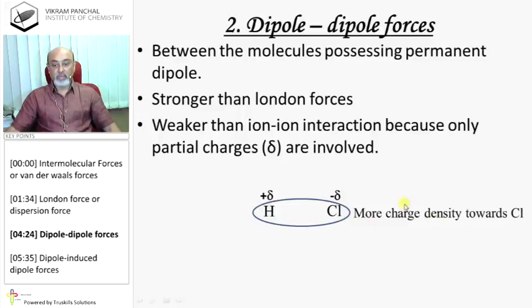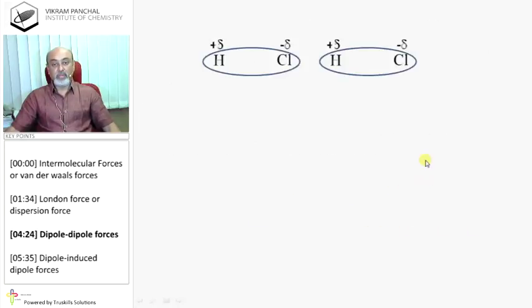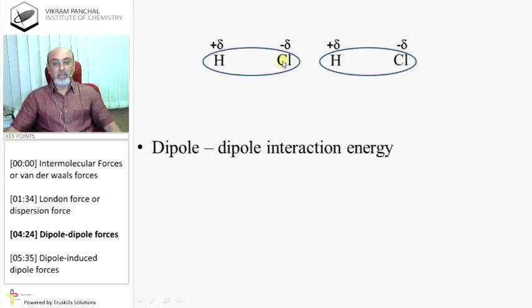So, more charge density appears towards chlorine, which makes it negative. When you take more than one HCl molecules, you will see that arrangement is in this direction, in this manner, where Cl minus of one molecule attracts H plus of another molecule. Therefore, arrangement of HCl molecules will be in this direction.